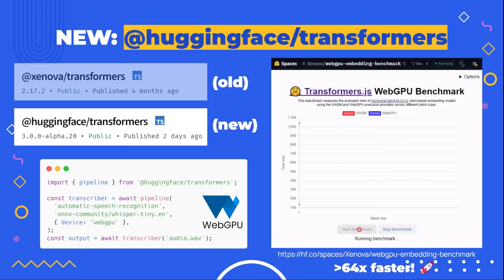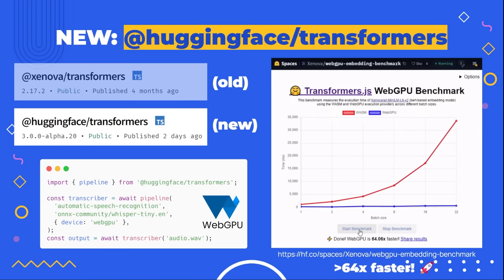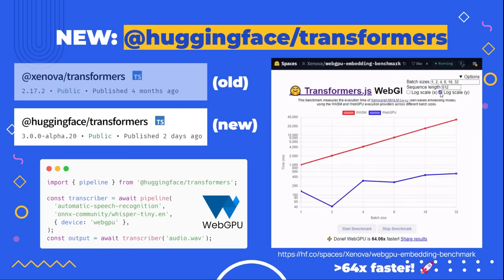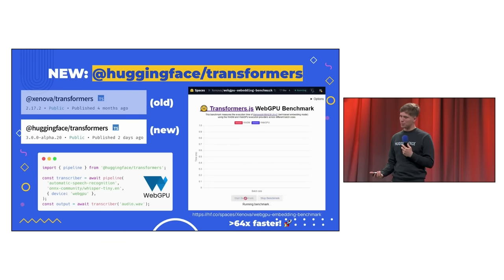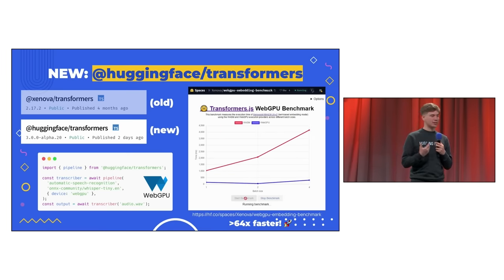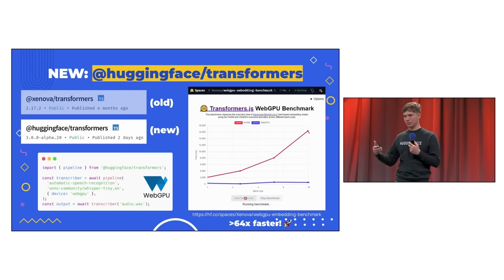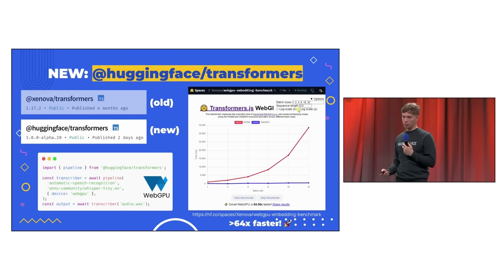You may have noticed that the previous code snippets use imports from huggingface/transformers instead of xenova/transformers. And that's because today, we finally released Transformers.js version 3, the main feature being WebGPU support. The projected speedups depend on the model and device you're using, but for simple BERT-based models, I was able to achieve a 64x speedup on a batch size of 32 on my Windows 10 PC. Some users have already posted of achieving over 100x speedup on their devices.